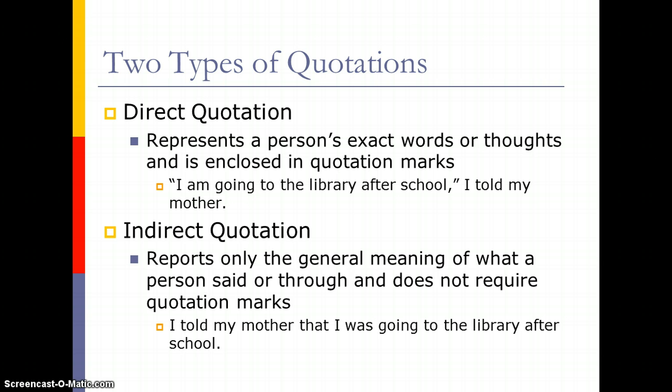The other type of quotation is an indirect quotation. This reports only the general meaning of what a person said or thought and does not require quotation marks. An indirect quotation would say the following: I told my mother that I was going to the library after school. I'm not actually speaking to my mother directly in this sentence — I'm just telling my reader what I told her. It's a little less effective, but both have their uses in the short story.